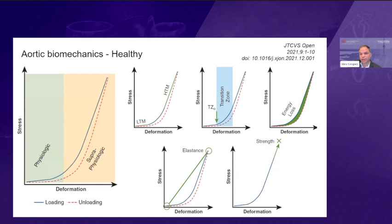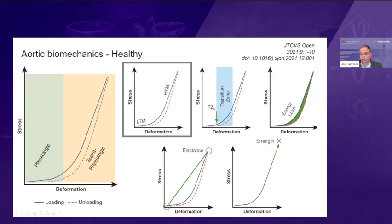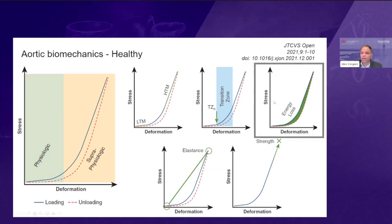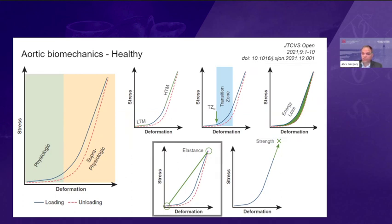There are plenty of different metrics that have been measured and described. You can look at the straight parts of the curve — the low end and high end of deformation — to give you tangential moduli, or the slopes at these points. There is a transition zone where elastin function gives way to more collagen function. We can try to measure where that transition begins, and we can look at the space between loading and unloading curves to measure energy loss. Taking points at the beginning and end of the curve generates an overall measure of elastance.